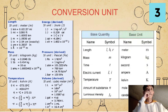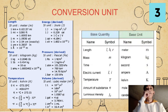For our pressure, our SI unit is Pascal or Pa. For every 1 Pa, there is 1 N over m squared, or 1 kg over m times s squared. For every 1 atmosphere, there is 10 raised to negative 3 m cubed.